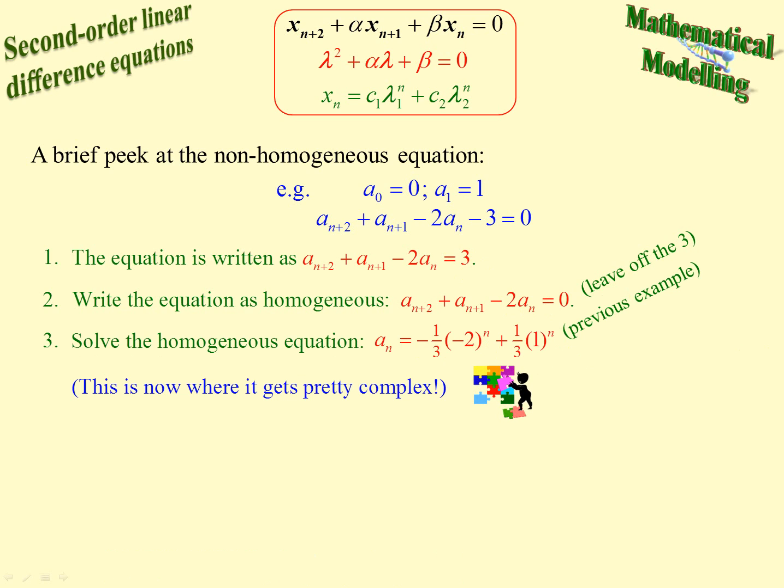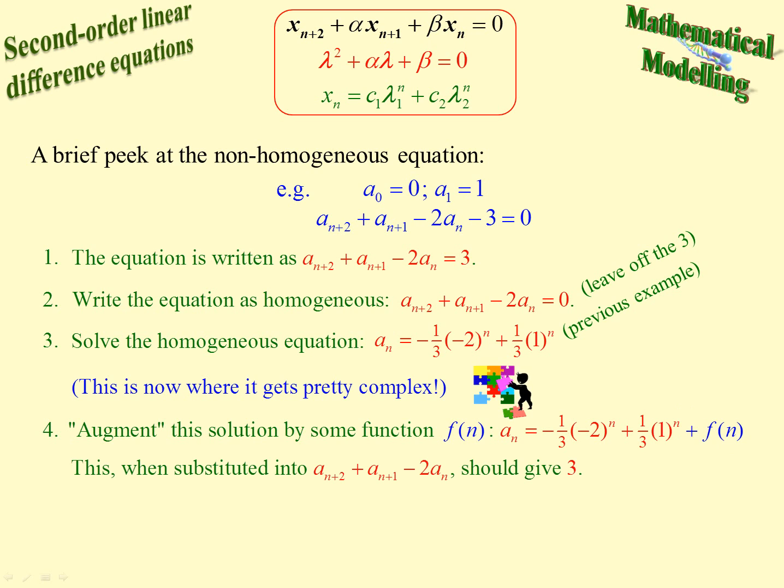Now, this is where we actually start taking a bit of strain. We augment the solution, we add to it by some function f of n. So some function in n we add on to the end of this formula for a sub n, there it is there. Now at this stage you need mathematical experience to be able to tell what shape this function is, what form that function is. Whether it's an exponential or a first degree polynomial, second degree polynomial. But that takes quite a bit of experience to work out. So when substituted into this here, we should get 3. So we need to work out what sort of function goes there, and then we substitute it into this, equate to 3, and solve.